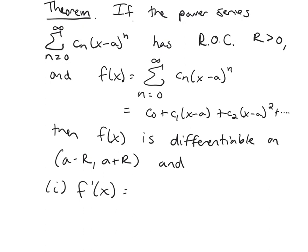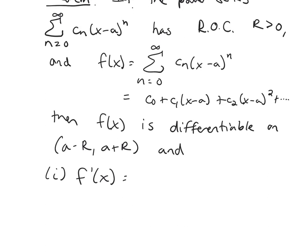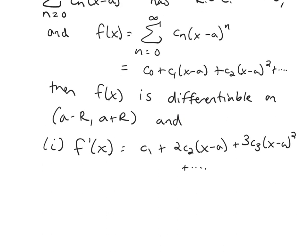So f'(x), if I want to take the derivative of f(x), I just have to take the derivative of all of these polynomial pieces. So you just have to take the derivative of each one of these. The derivative of a constant is zero. This one I'm going to get c1 for the derivative. I'll do the power rule. So you just have to take the derivative of each term for the power series. So you're getting c1 plus 2c2(x-a) plus 3c3(x-a)^2 and so forth.